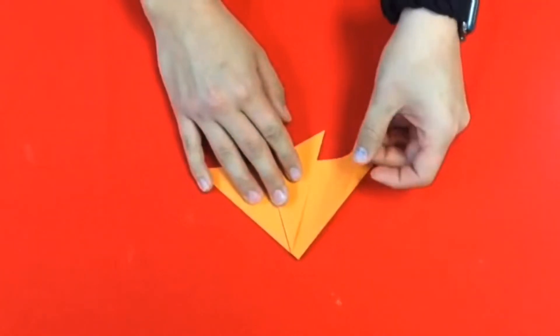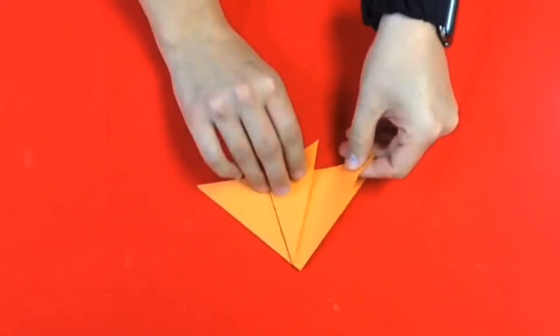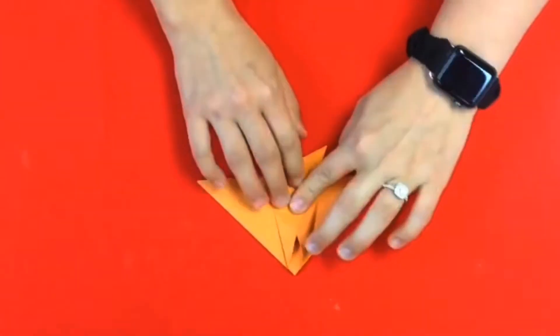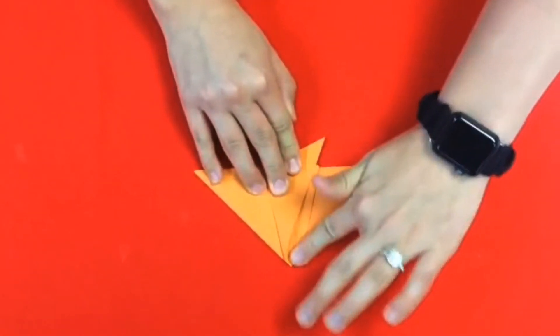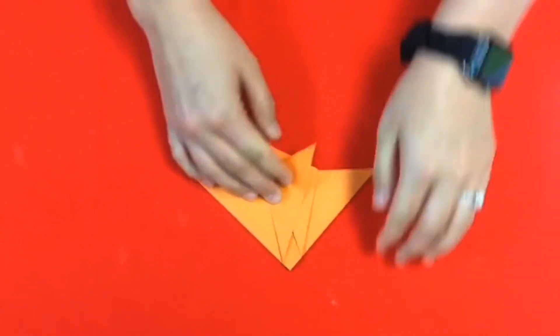Now you're going to get the top layer on the left side and you're going to put it underneath. And hold it like this. And make sure you have nice creases.